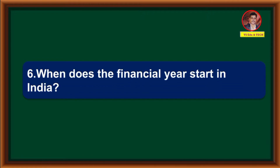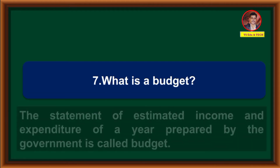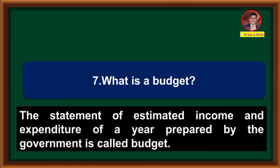When does the financial year start in India? It starts from April 1st and ends on 31st March. What is a budget? The statement of estimated income and expenditure of a year prepared by the government is called budget.